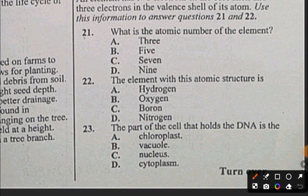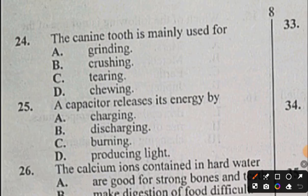Question 23: The part of the cell that holds DNA is the: A) chloroplast, B) vacuole, C) nucleus, D) cytoplasm. The answer to question 23 is C, nucleus. Question 24: The canine tooth is mainly used for tearing. Question 25: The capacitor releases its energy by: A) charging, B) discharging, C) burning, D) producing light. The answer to question 25 is B, discharging.